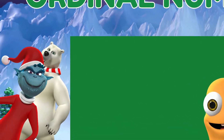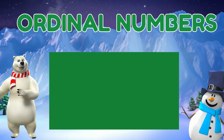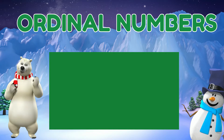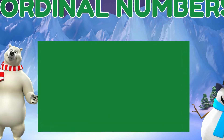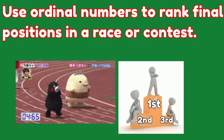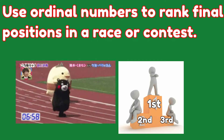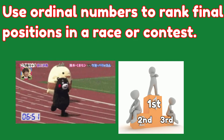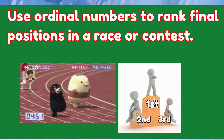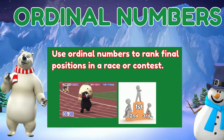When do we use ordinal numbers? We use ordinal numbers to describe the ranking or position of something or someone. One of the most common uses of ordinal numbers is to rank winners in a race or on most any contest. Winners are ordered as first, second, third, and so on.